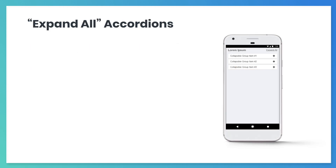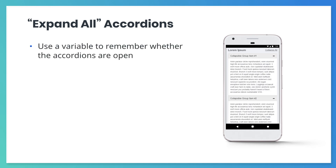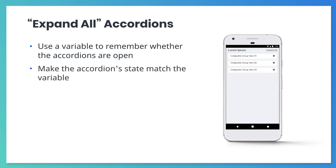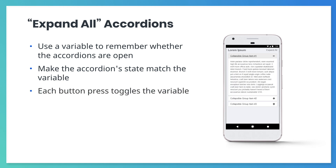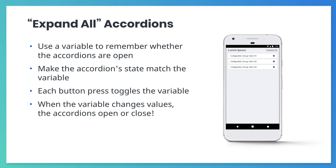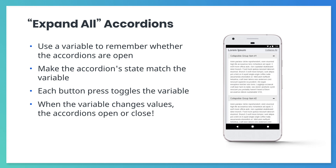Now let's look at this approach with respect to our expand-all sections example. First, we create a variable that represents whether all the accordions should be open or closed. Next, update each accordion so they open or close depending on the variable's current value. So when a user presses the expand-all button, the variable changes value, and then the accordions open or close accordingly.